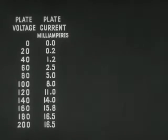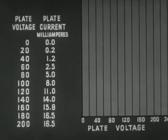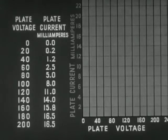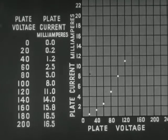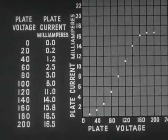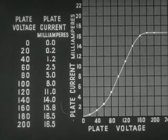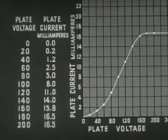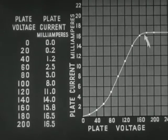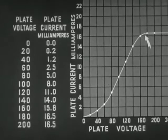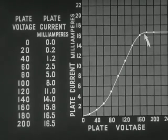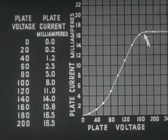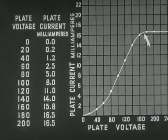With ordinates representing voltage and current, we can trace a curve to show this relationship. Note the saturation point, beyond which there is no increase in the plate current even when the voltage is increased.